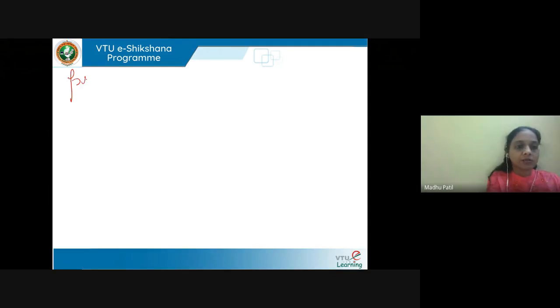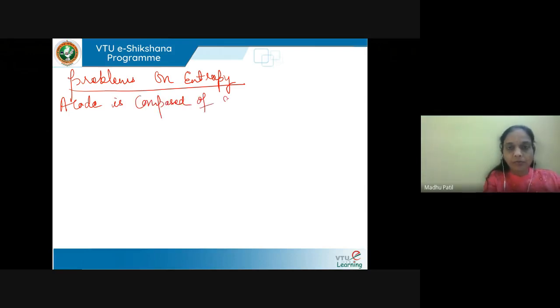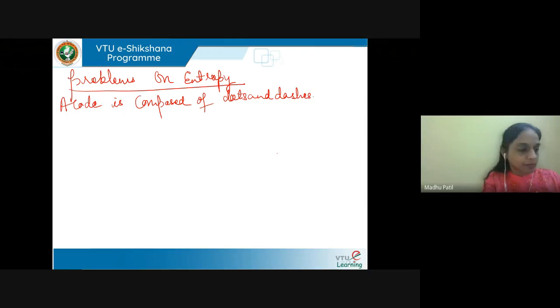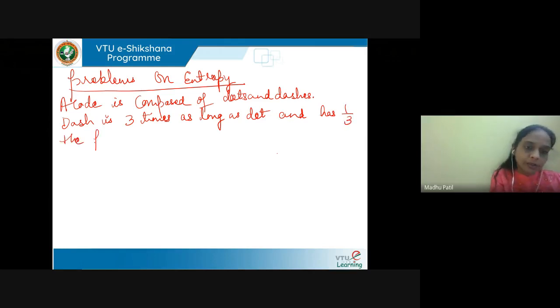In this session, we will solve problems on entropy. Let us consider a problem. A code is composed of dots and dashes. Assuming that dashes are three times as long as a dot and has one third the probability of occurrence.